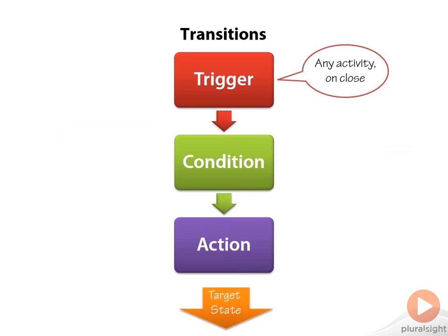The trigger can be any activity. In previous versions — the original state machines in Workflow 3 — you had this notion that it was an event-driven activity, and you had to have special activities that knew about events, such as delays, WCF receives, or other activities with a special interface. In Workflow 4, the trigger can be any activity. It could be a WriteLine, an Assign, or an empty sequence. Whatever that activity is, when it closes — when it's done — that's the signal that this transition should start.